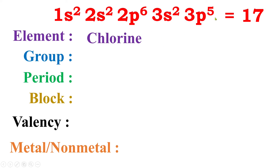If the valence electron count is 7, then it belongs to Group 7A. If it had 1 electron in the outer shell it belongs to Group 1A, 2 electrons → 2A, 3 electrons → 3A, 4 electrons → 4A, and so on. Since it contains 7 electrons in the outer shell, it belongs to Group 7A. If it were 8, it would belong to Group 0 (noble gas group). This way we can declare that this element belongs to Group 7A.